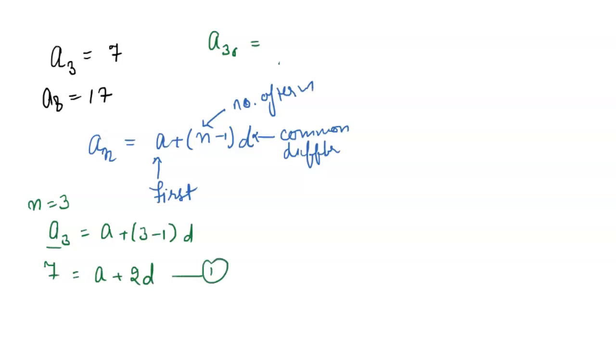Second, we put N equal to 8. So A8, which is 17, equals A plus N minus 1, which is 8 minus 1, or 7D. This is the second equation.